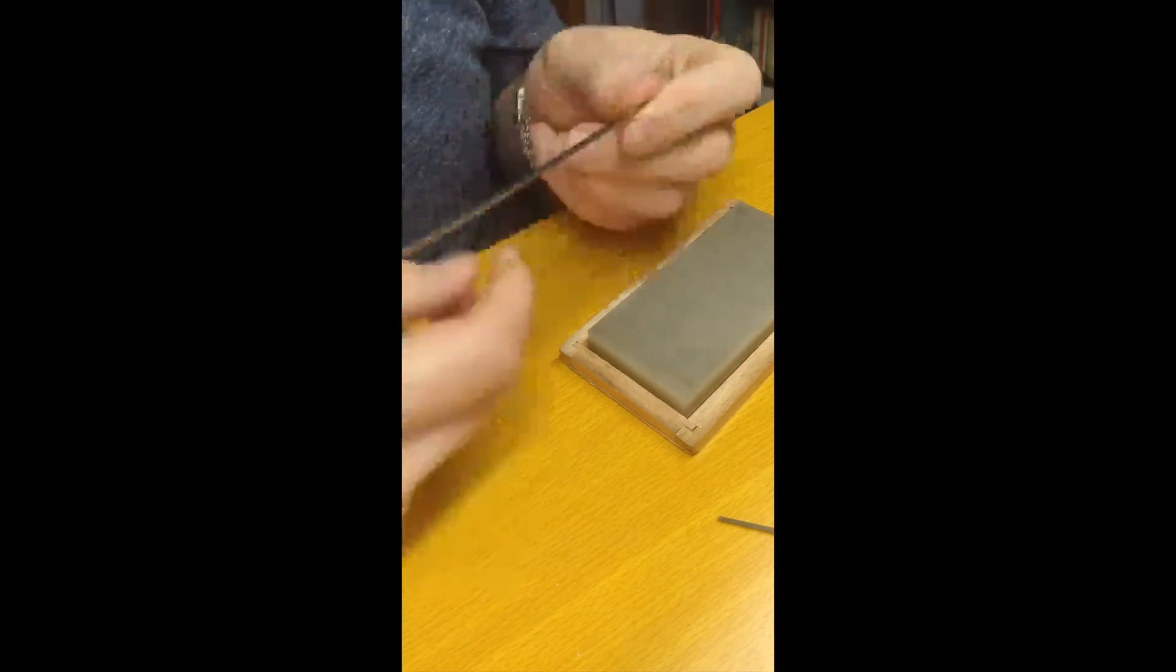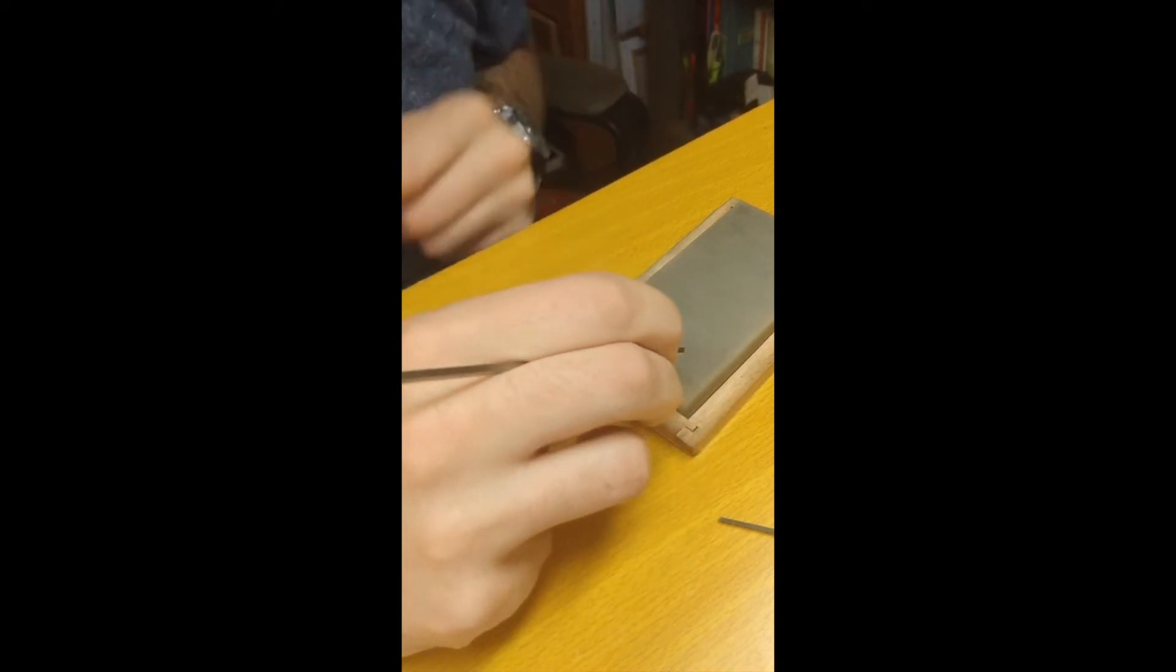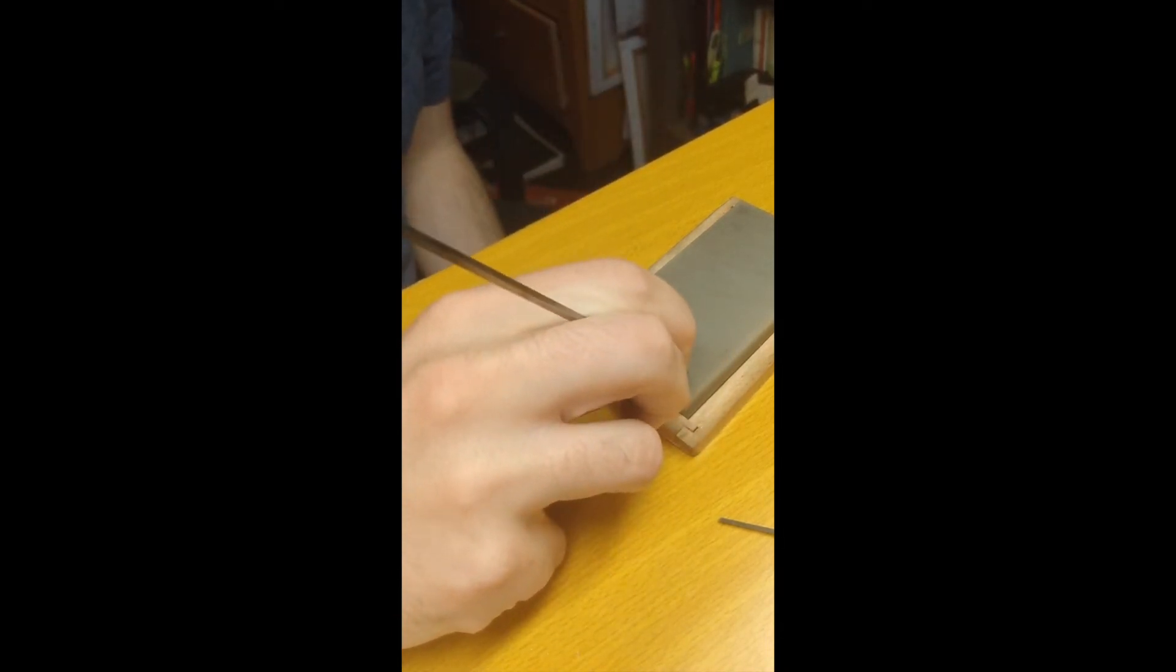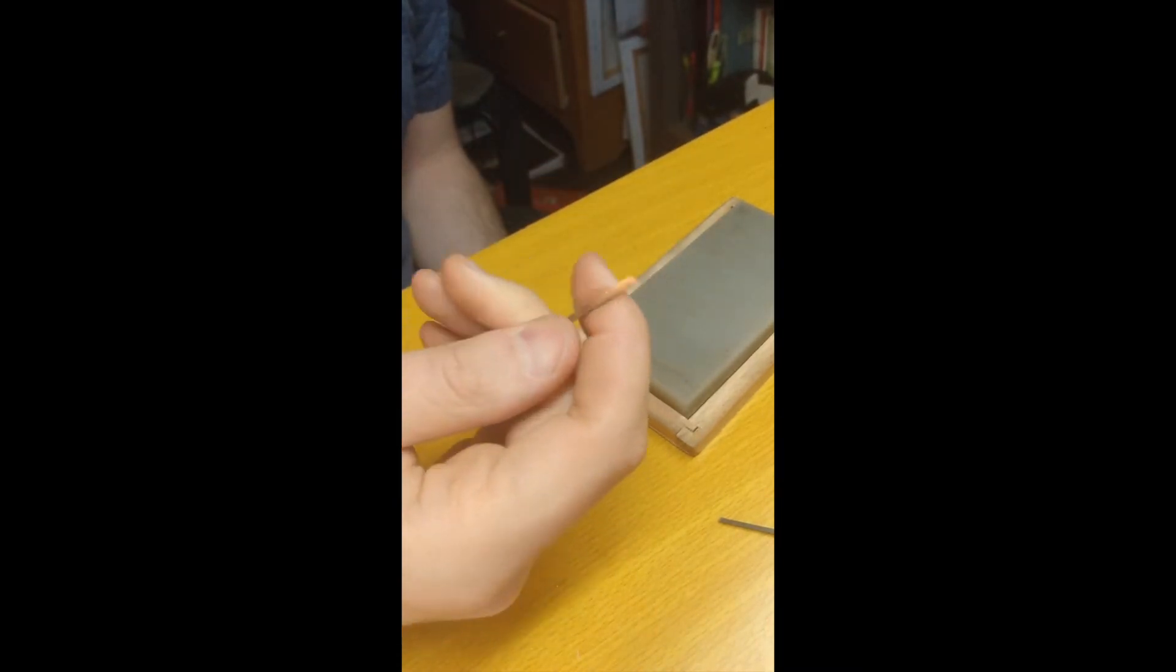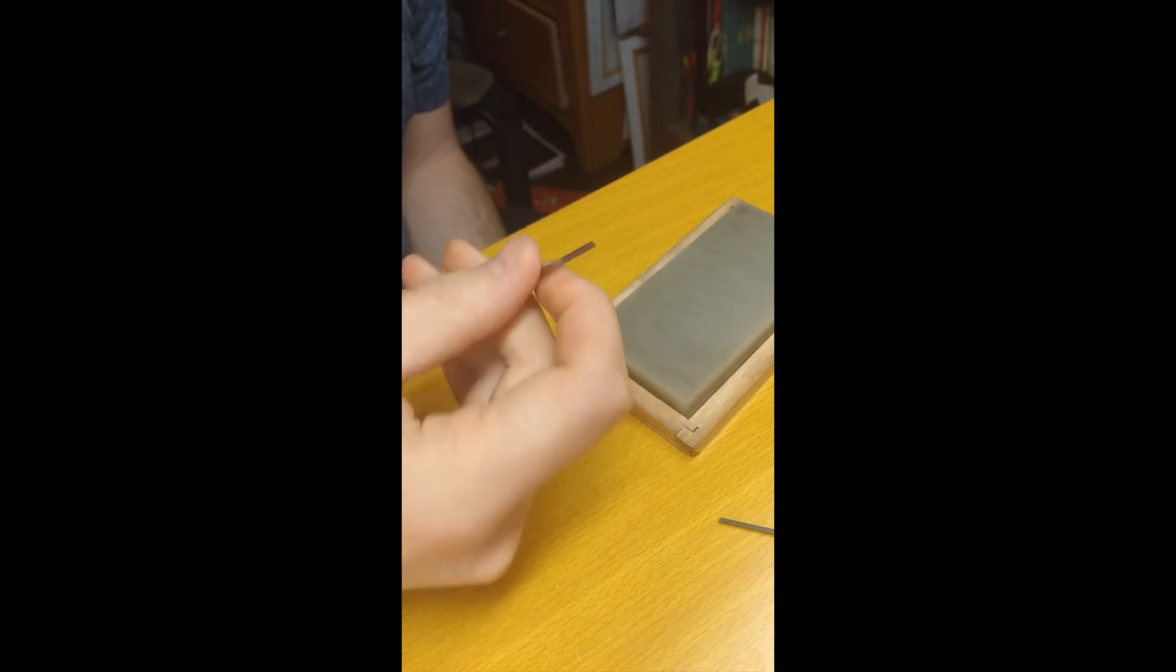So what I need to do is hold it as if it was a pencil, feel the flatness of the edge and check the flatness with the loop. And then I'm going to turn it in small circles in order to get a perfectly flat, very polished edge diamond on my graver.